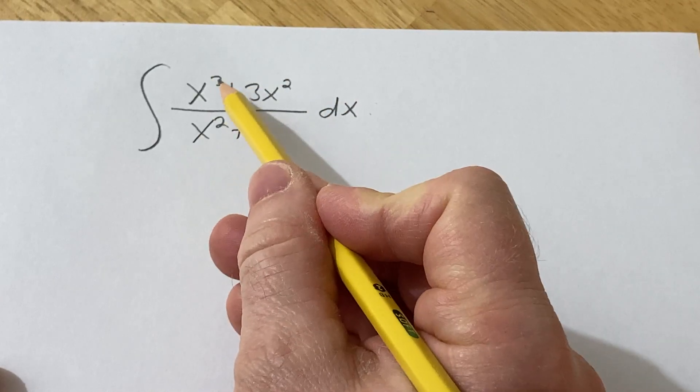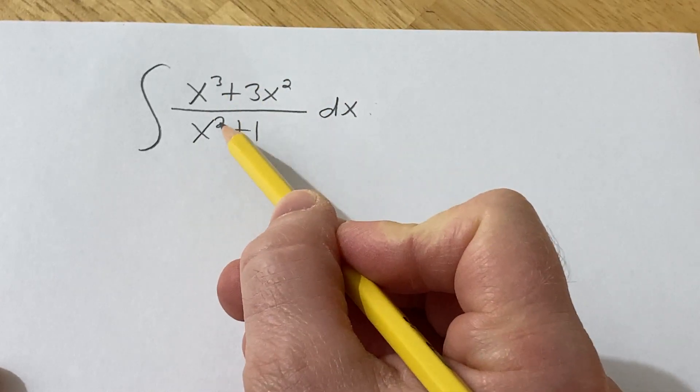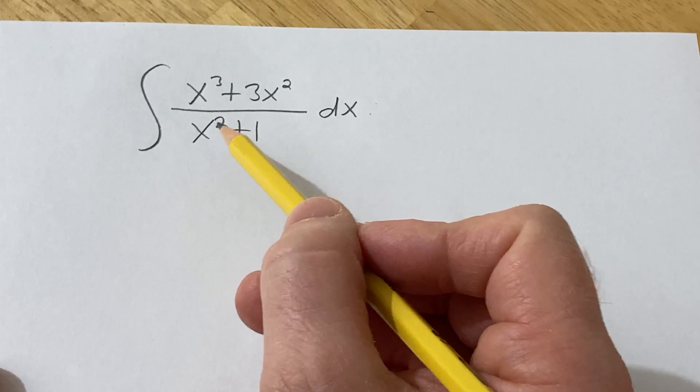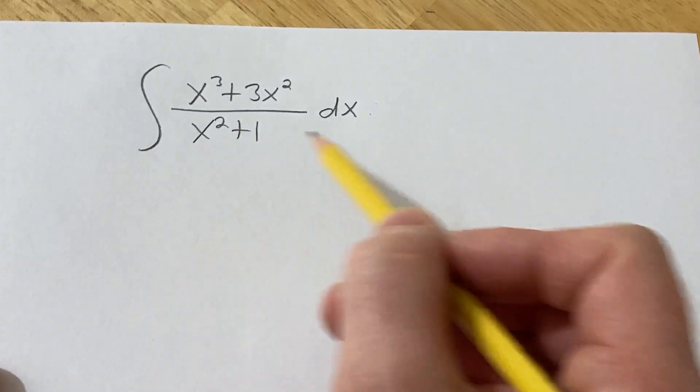And you'll notice that the degree here in the numerator is 3, and here it's 2. So whenever you have something like this, you want to first perhaps try long division. So let's go ahead and do that.